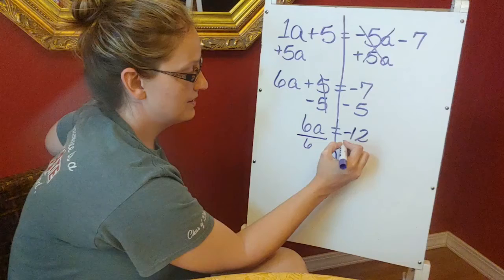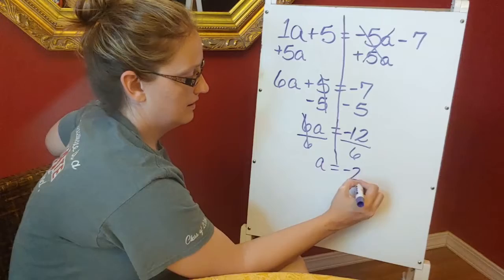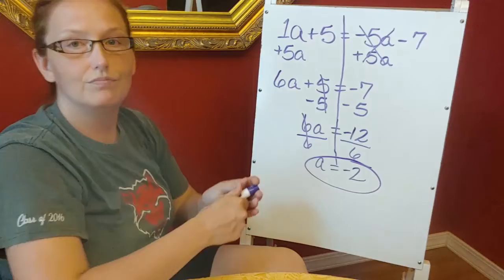Still working on getting this a by itself. So I'm going to divide both sides by 6. And negative 12 divided by 6 is negative 2.